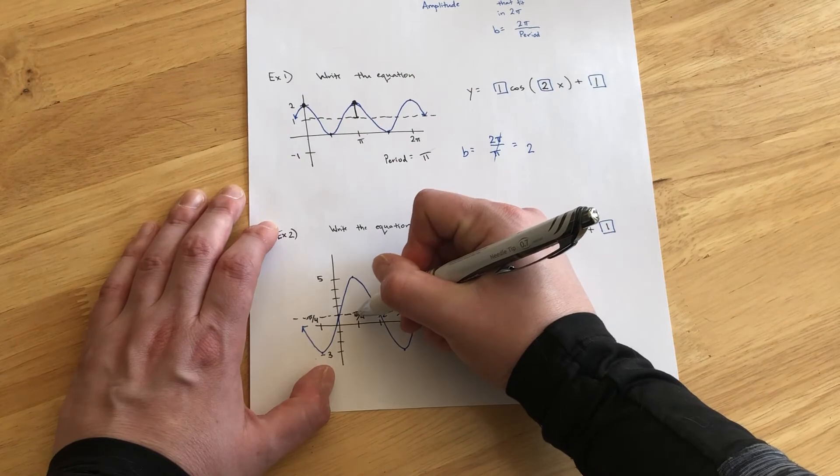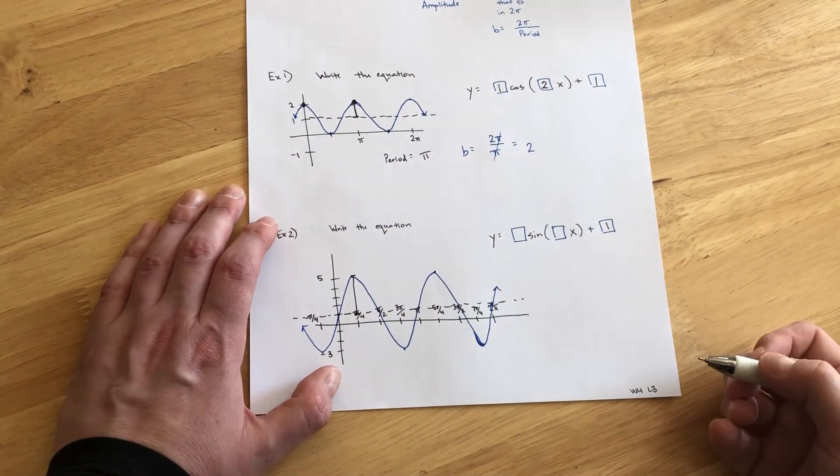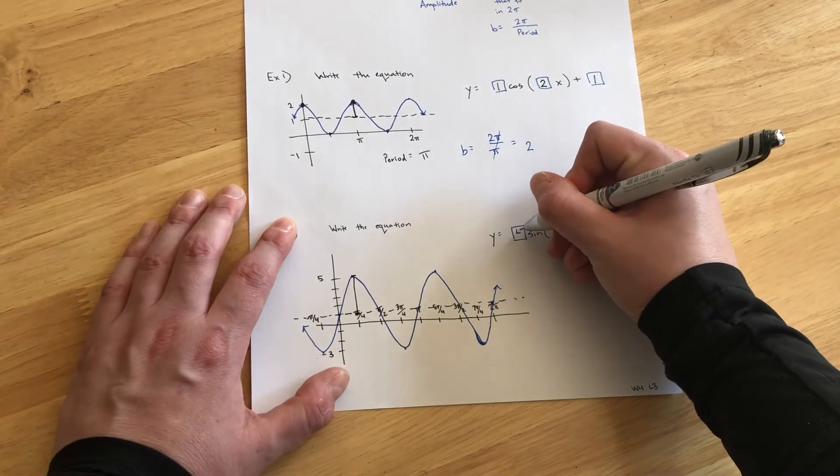For the amplitude, well, going from that height of 1 up to the peak or down to the low end, we can see that the amplitude is 4.